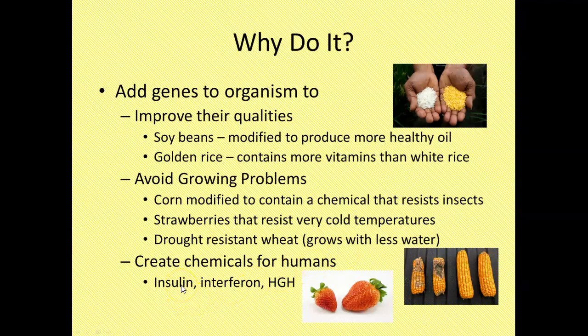Insulin is a big one. It's one of the first ones that we worked on. Interferon, this is actually a chemical that works for autoimmune diseases. And HGH is actually human growth hormone, which is used for all sorts of reasons to make our lives better. So that's why we want to do it, and we're going to focus kind of on this one today when I show you how we do it.